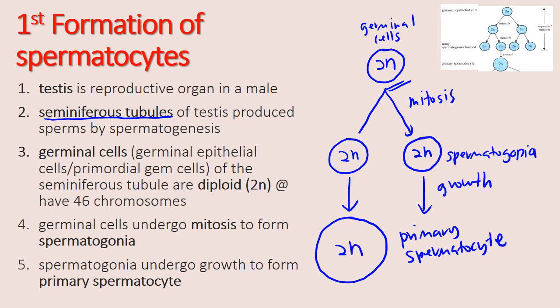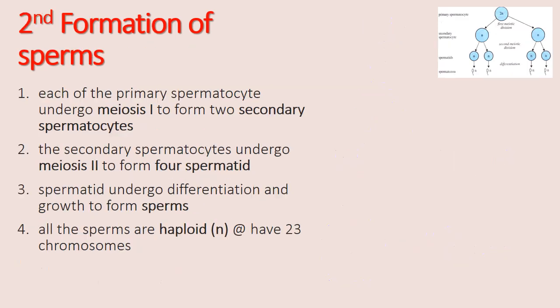As you can see, the size of the primary spermatocyte is a little bit bigger than the spermatogonia because of the growth process. Now we move on to the second stage, which is the formation of the sperm.